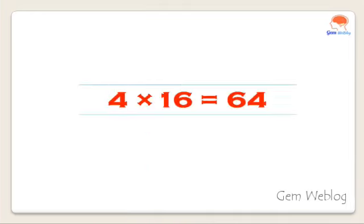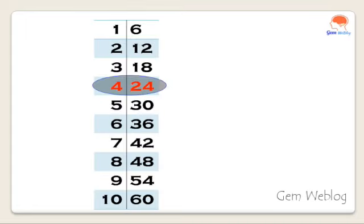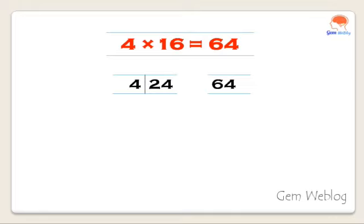Now we are going to see the logic behind the multiplication table generation. For this we have taken the entry of 4 × 16 = 64. The corresponding entry in the first and the sixth table is highlighted. Now 4 × 16 = 64, and the corresponding tables of 1 and 6 have been given.